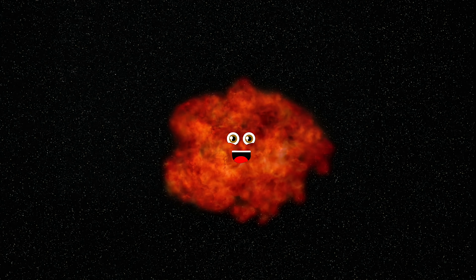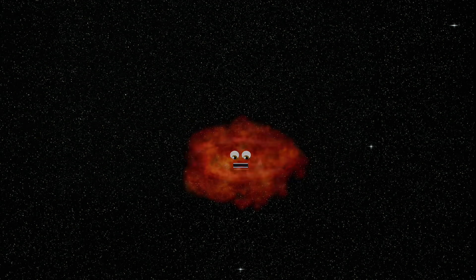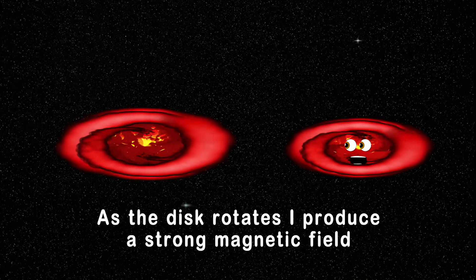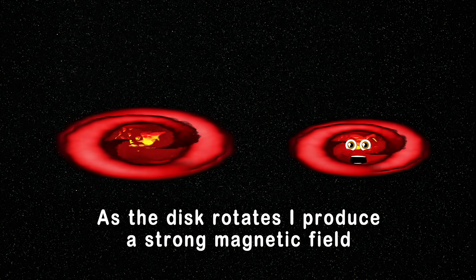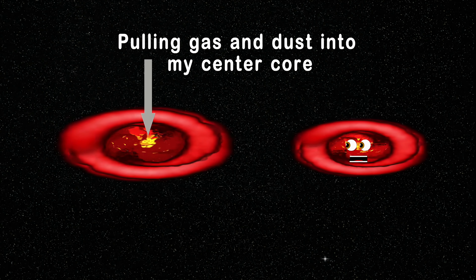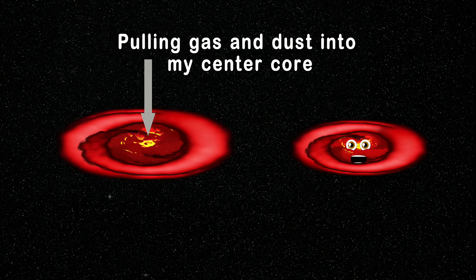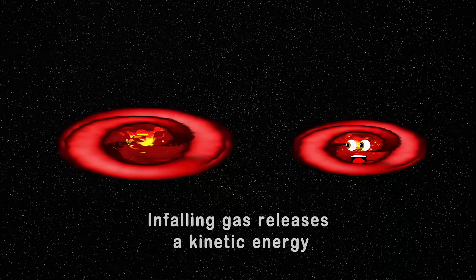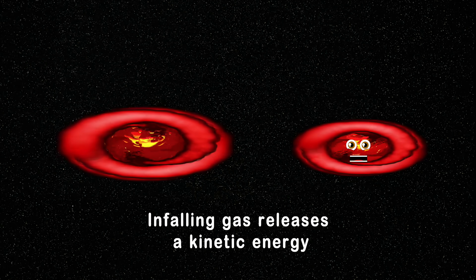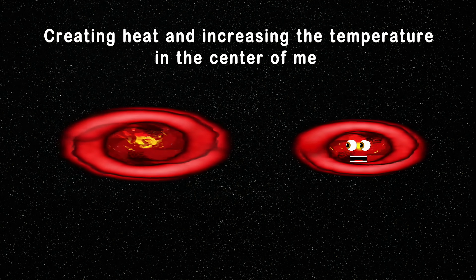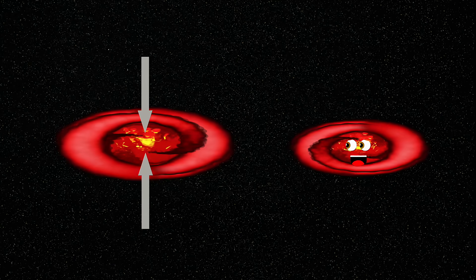The first thing I do when I break free from my molecular cloud, I start to spin until I form this disc around me. You see now, as the disc rotates, I produce a strong magnetic field. Pulling gas and dust into my center core as I reveal. The infalling gas releases a kinetic energy, creating heat, increasing the temperature in the center of me.